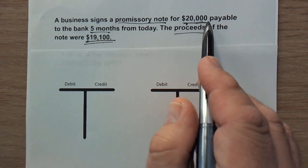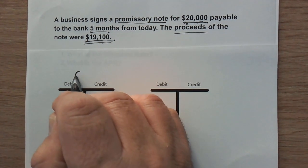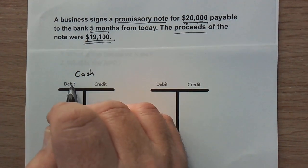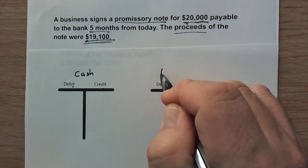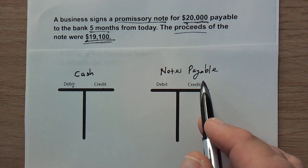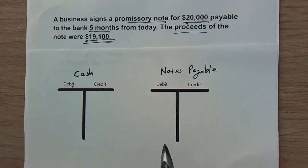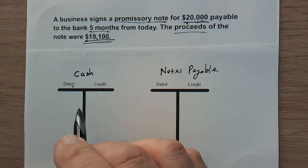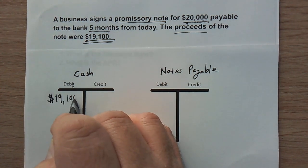The first thing we're doing is signing the promissory note and receiving the initial proceeds of $19,100. I'll start with a T-account for cash — that's an asset, so it increases with debits and decreases with credits. We're going to receive $19,100 cash, so our cash goes up by $19,100, and I'm going to debit $19,100 to cash.